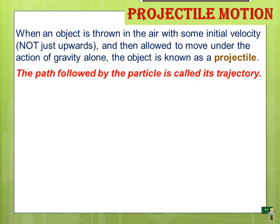What is projectile motion? When an object is thrown in the air with some initial velocity — not just upwards — and then allowed to move under the action of gravity alone, the object is known as a projectile, and the path followed by the particle is called a trajectory.